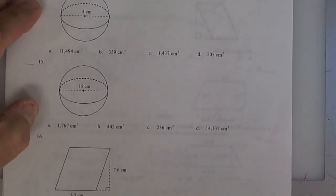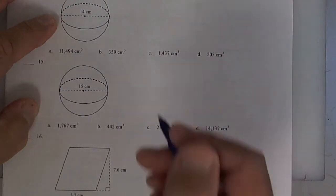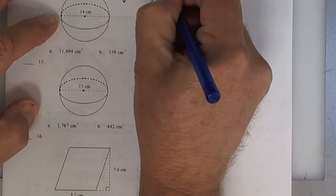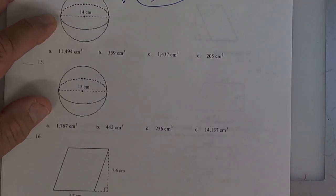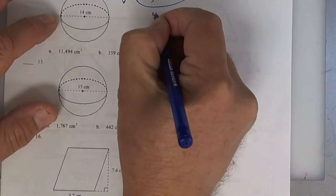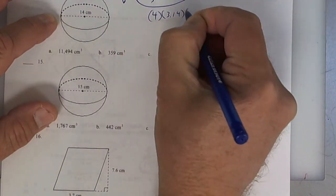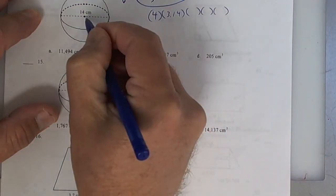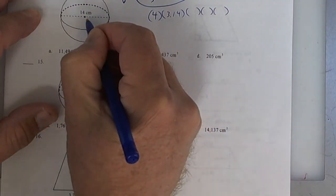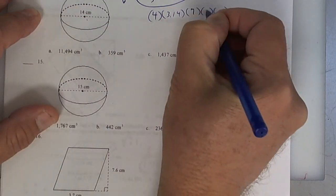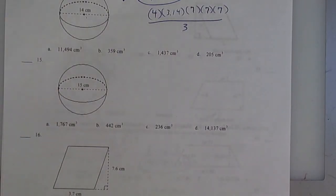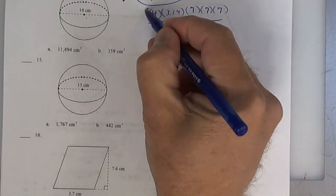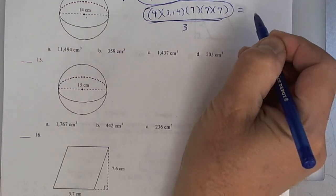This one right here is a sphere. The formula is 4/3 times pi times radius cubed — try to memorize that one because it's not on the board. We're going to do 4 times 3.14 times the radius three times. If you put 14, you'll miss it because 14 is the diameter, so it should be 7 times 7 times 7. Then divide by 3. Make sure you multiply all of it, press equals, and then divide by 3.